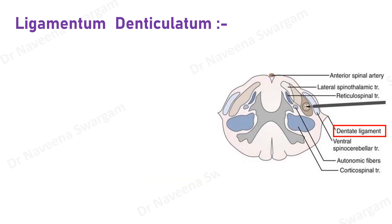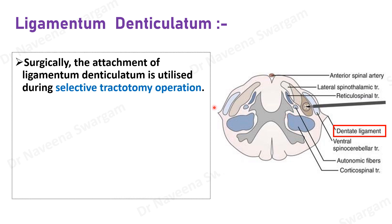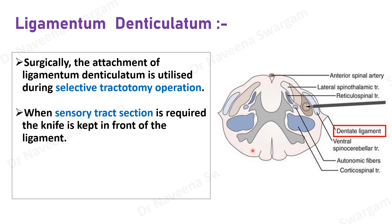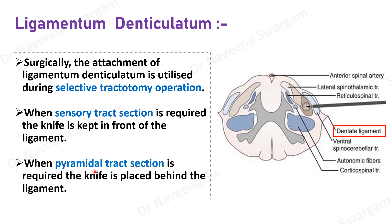Regarding the surgical importance of ligamentum denticulatum: its attachment to the spinal cord is utilized to approach the sensory or pyramidal tracts within the anterolateral funiculus of the spinal cord during selective tractotomy operations. To reach the sensory tract, the knife is placed in front of the ligament, whereas to reach the pyramidal tract, the knife is placed behind the ligament.